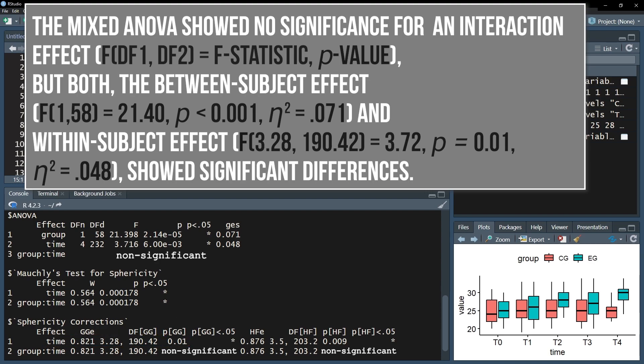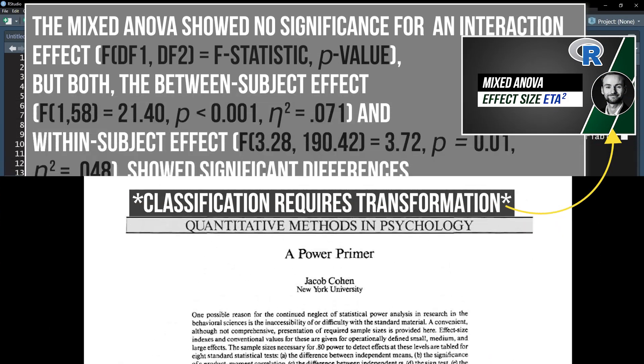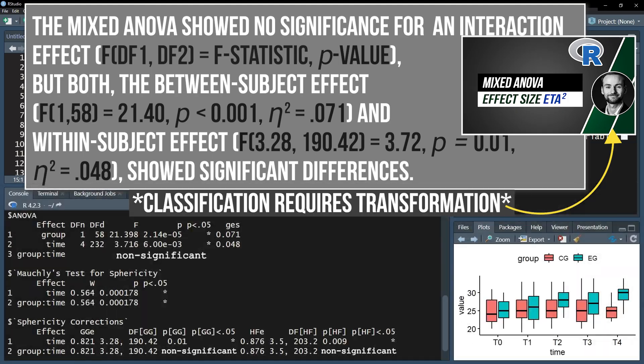For any effect you decide to report, you are required to provide the test statistic alongside the degrees of freedom as well as the p-value. The effect size, usually eta squared, should also be reported and classified with for example Cohen 92 or the respective research field specific thresholds.